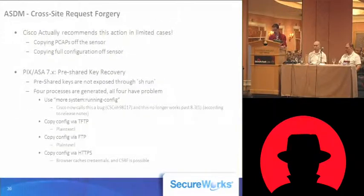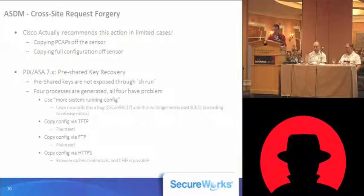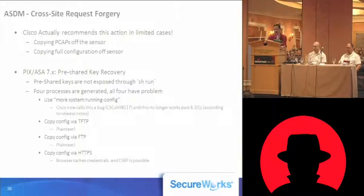There are actually a few cases where Cisco recommends you use the browser to connect to your ASA. This isn't done frequently, but there are some corner cases where it's the recommended way to access the ASA. One of these is for copying captures off the sensor — it can be a lot easier than copying over FTP or SCP to just pull up that URL. But as soon as you enter those credentials, that browser session has them.